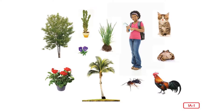In today's read aloud, listen to find out what plants need to live. What do you see in this picture? There are many different kinds of people, animals, and plants that live in our world. Plants means living things that have leaves and roots and make their own food. In some ways, people, animals, and plants are alike — they are all alive and need food, water, and air to grow and stay alive.